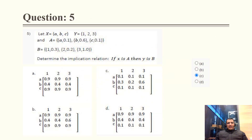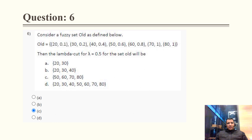Question 5: Let X = {A, B, C} and Y = {1, 2, 3}. Set A has elements with given membership values; set B is a fuzzy set with membership values 0.3, 0.2, and 1. After calculation, the correct option is C. You can directly select option C for this calculation-based question.